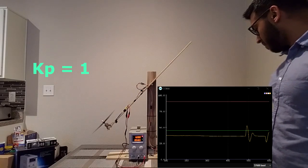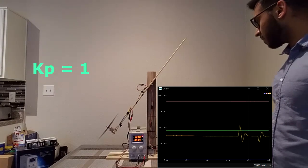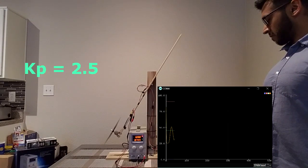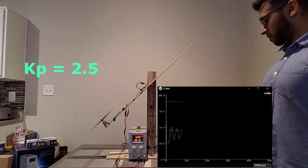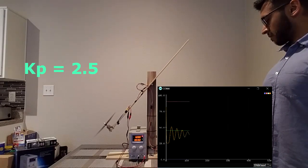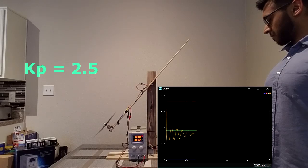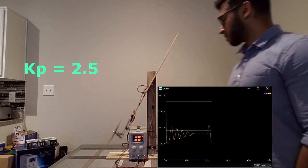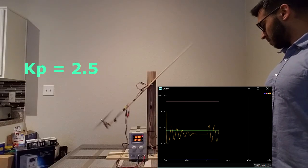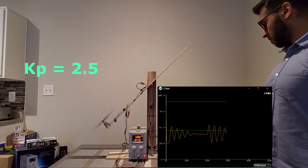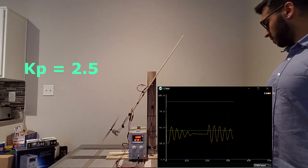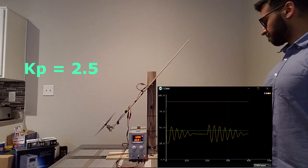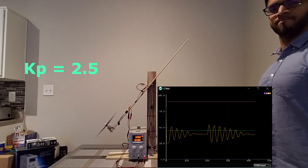We can see that our system is not oscillating yet. Let's increase our Kp value to 2.5. We can see that it's overshooting, but the response does not oscillate consistently.